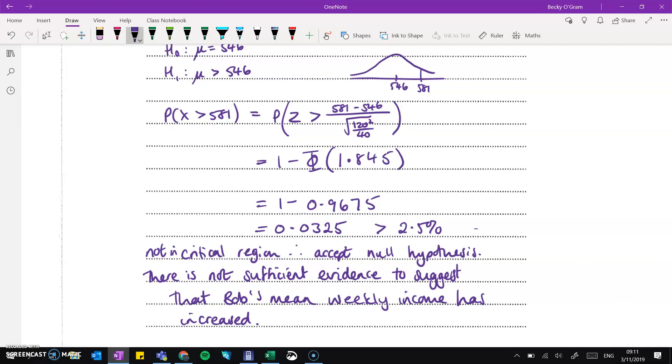Now, working through those probabilities, we get to this point here where the chance of that is greater than 2.5%. It's not in the critical region. Therefore, we accept the null hypothesis. It's not unlikely enough for us to think that that couldn't have happened and we'll reject the null hypothesis. So there's not sufficient evidence to suggest that Bob's mean weekly income has increased.